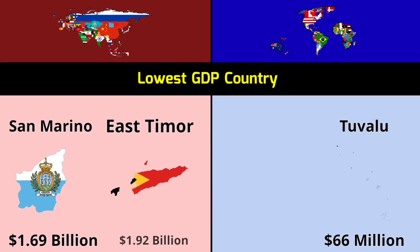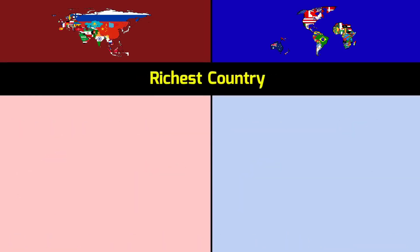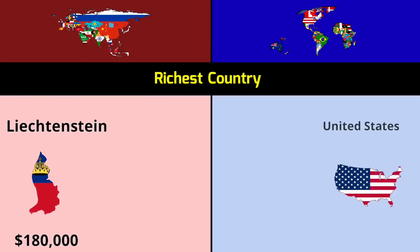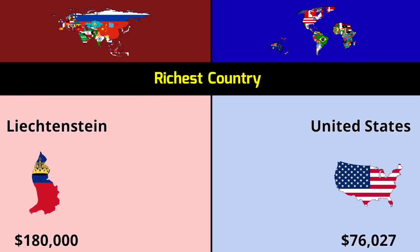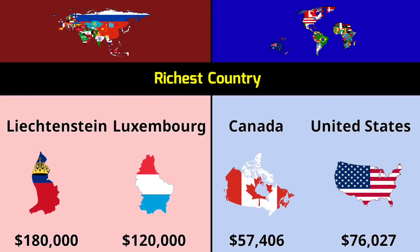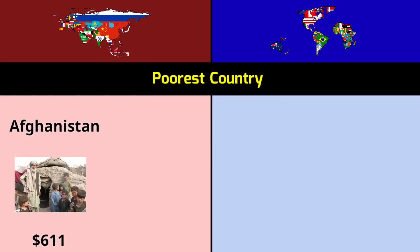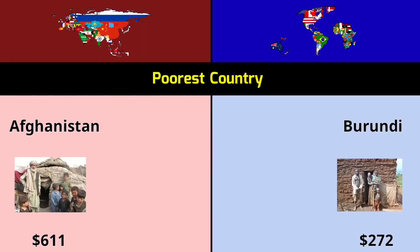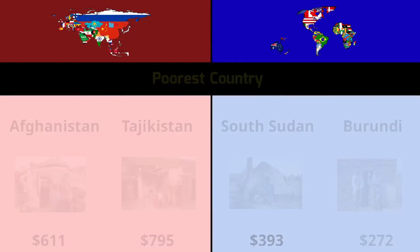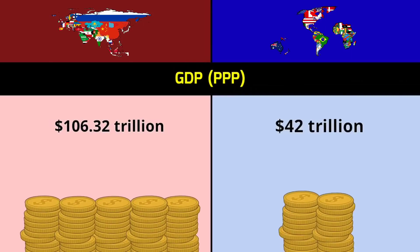Richest country by GDP per capita — Asia: Liechtenstein $180,000, Luxembourg $120,000; Rest of World: United States $76,027, Canada $57,406. Poorest country by GDP per capita — Asia: Afghanistan $611, Tajikistan $795; Rest of World: Burundi $272, South Sudan $393. GDP PPP: Asia $106.32 trillion vs Rest of World $42 trillion.